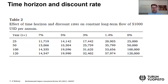It is illustrative to start from the rightmost column where the discount rate is zero. If the time horizon is 25 years, then without any discounting, 1,000 per year yields 25,000 in total. If the time horizon is doubled from 25 to 50 years, the benefits are also doubled to 50,000. Doubling further to 100 years doubles the benefits again, and at 120 years it yields 120,000 dollars.